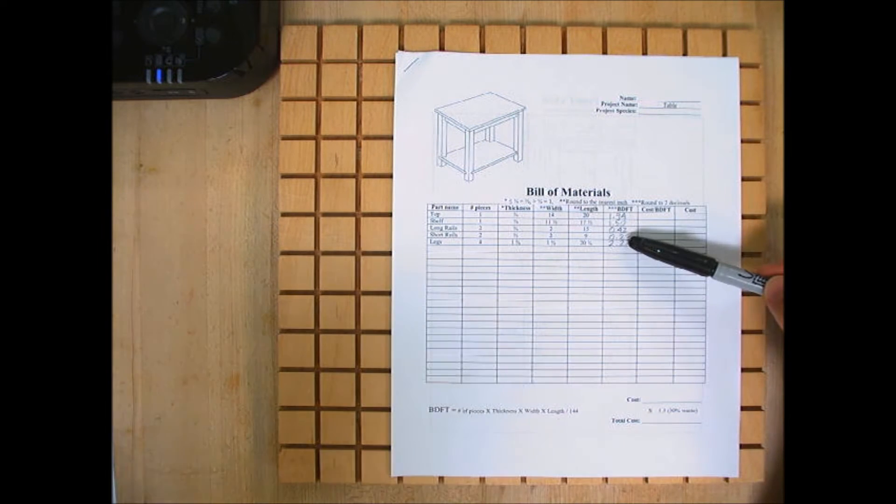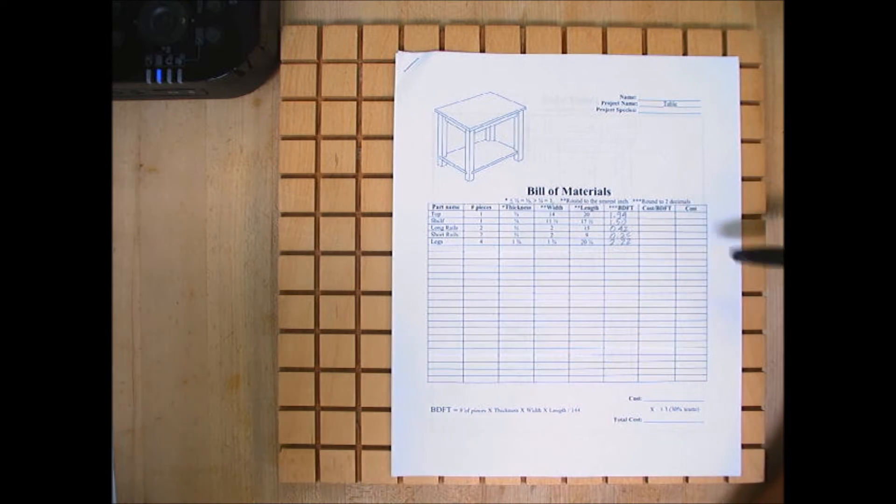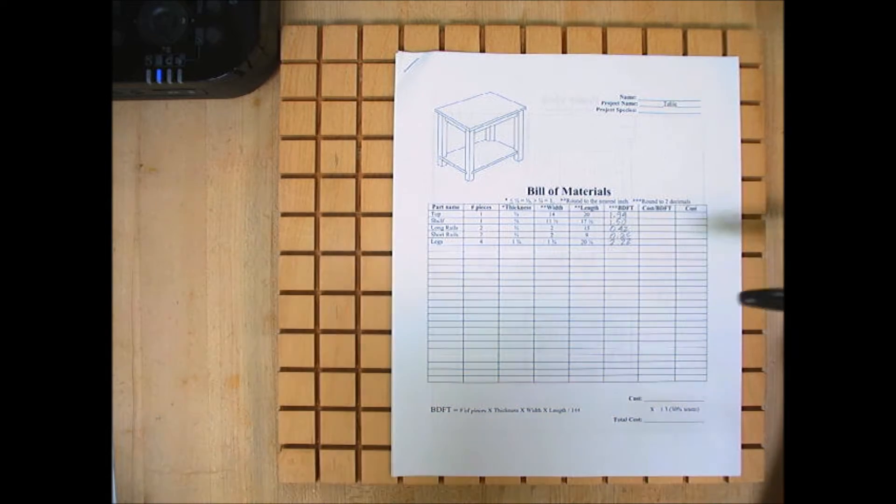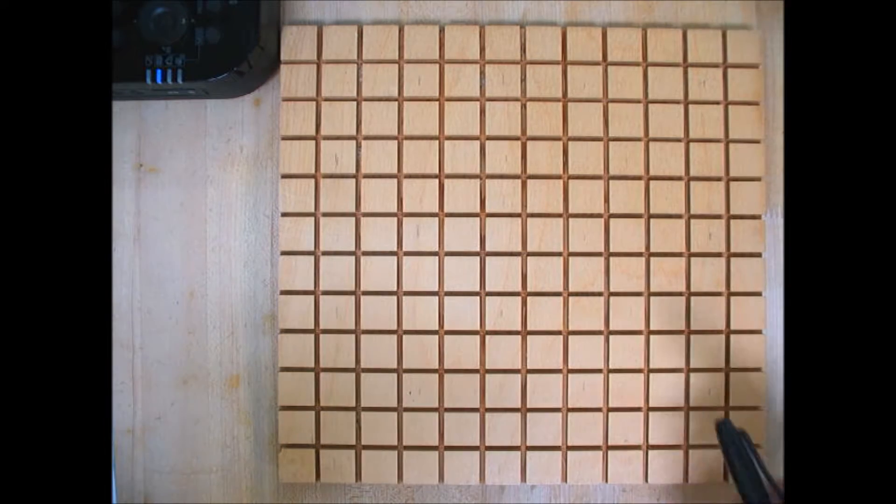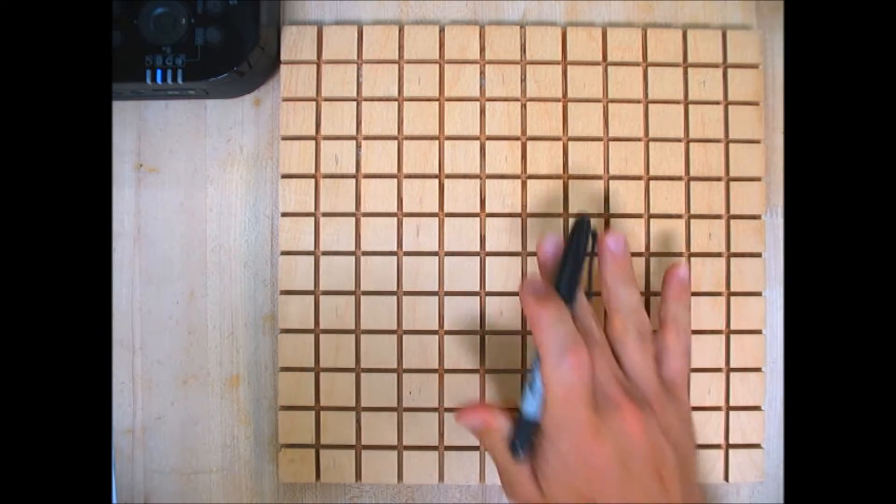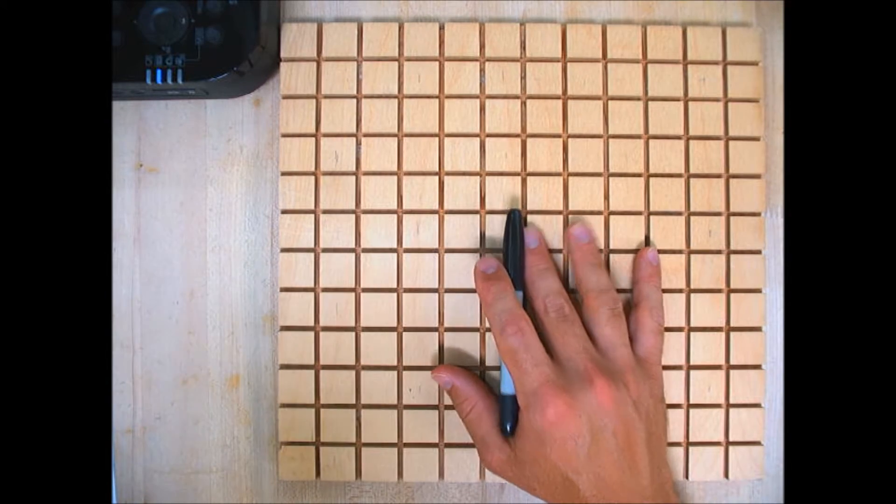So now that we have board feet, we can go on to our second goal: calculating cost. But first we need to know what the lumber mill is selling the lumber for, and what unit of measurement do you think they sell by? Yep, you guessed it, board feet. So they will give us a cost per board foot.